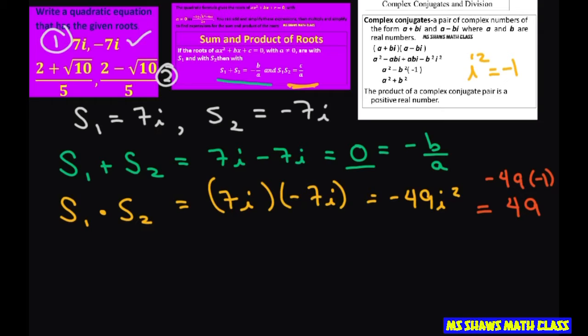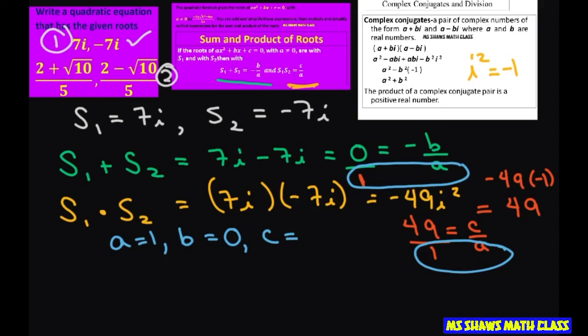And 49 is your c divided by a. When I put this in fraction form, that means my a is 1. Your a's always have to match. So if they don't match, you have to make them match. So now we have a is 1, b is going to be 0, and c is 49.